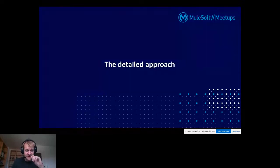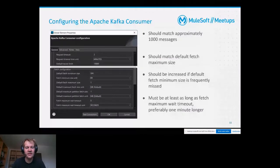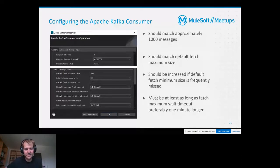Let's get to the detailed approach. What am I going to do in detail when implementing all these components? The first thing is configuring the Apache Kafka consumer. As you can see on my slide, there is a bunch of parameters that can be adjusted when configuring the Kafka consumer. You may be familiar with some of these if you have used a single message listener before.